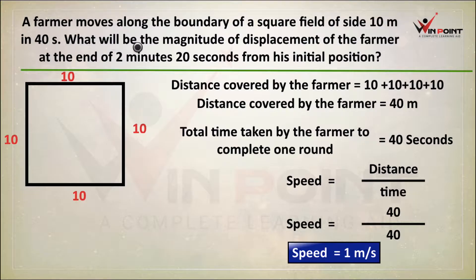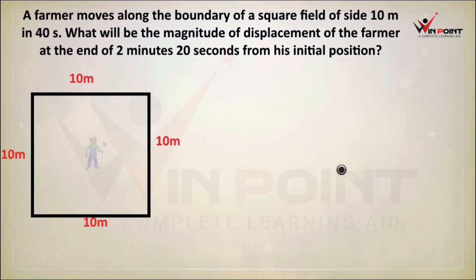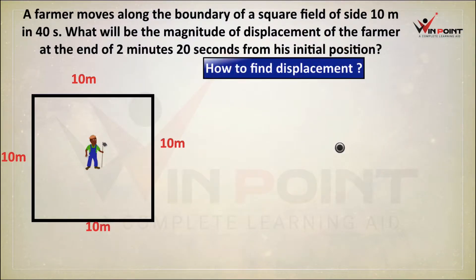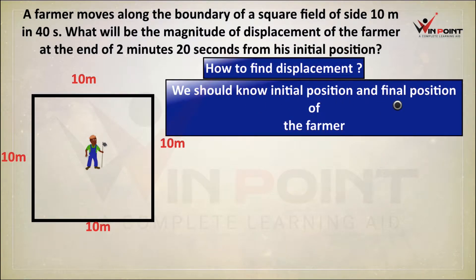But the question is: what will be the magnitude of displacement of the farmer at the end of 2 minutes 20 seconds from his initial position? We need to find displacement after 2 minutes 20 seconds. To find displacement, we need the initial position and the final position of the farmer.